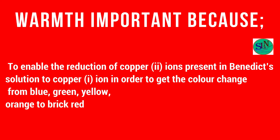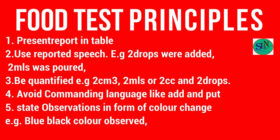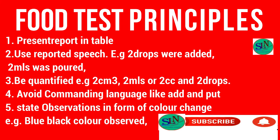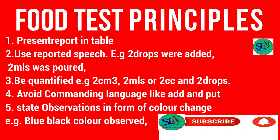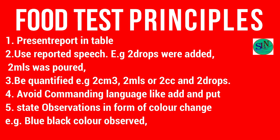After testing, you are required to write a food test report following these principles: First, the report should be presented in tabular form. Second, it must be written in reported speech — for example, 'two drops were added' or 'two milliliters was poured.' Third, solutions and reagents must be quantified specifically — say 'two milliliters' or 'two drops,' not 'few,' 'some,' or 'little.' Fourth, commanding language such as 'add' or 'put' should be avoided. Fifth, observations should be stated as color changes — for example, 'blue color observed' or 'purple color observed.'